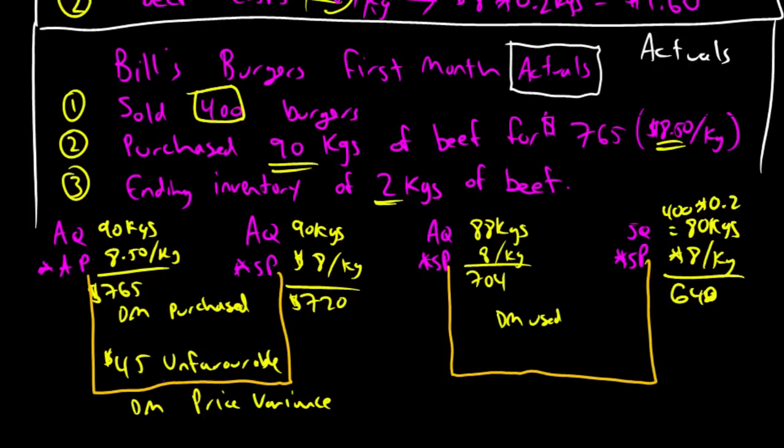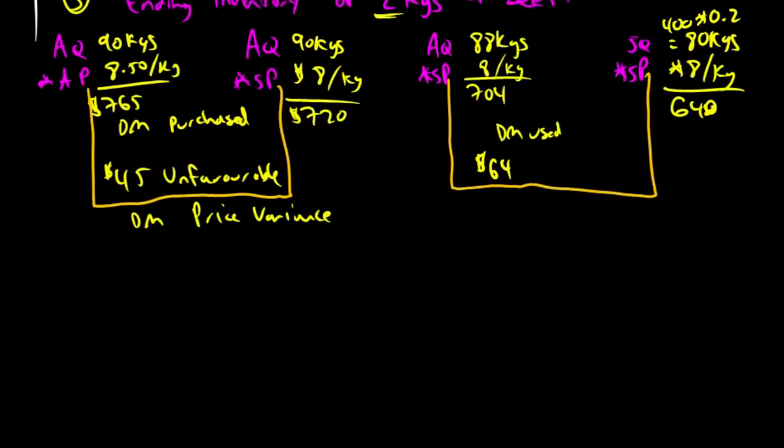So, again, we're left with a position where we have two numbers. We want to figure out the difference, and the difference is $64. Is this a good difference or a bad one? Is it favorable or unfavorable? Well, we should have used 80 kilograms of ground beef. We used 88. We used too much ground beef. This might be good for our customers. They get a little bigger burger, but it's not good for our bottom line. We used too much beef. Or maybe we just were wasteful. This, in any event, is an unfavorable variance. And we call this the DM quantity variance, direct materials quantity variance.